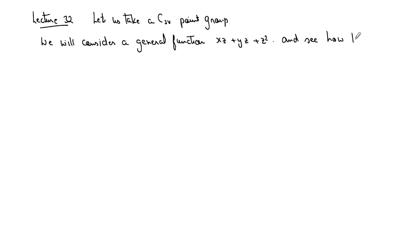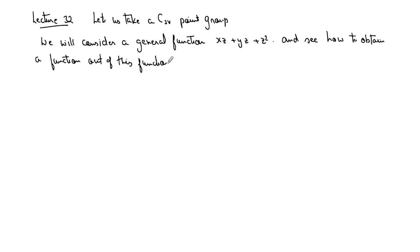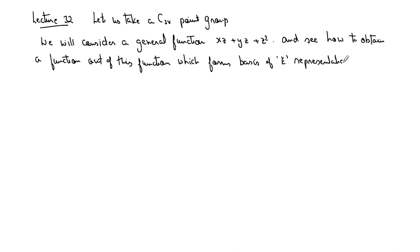We will consider this general function under the C3v point group and see how to obtain a function which forms the basis of the E representation. Note that this E is the Mulliken symbol E, not the symmetry element E or symmetry operation E.